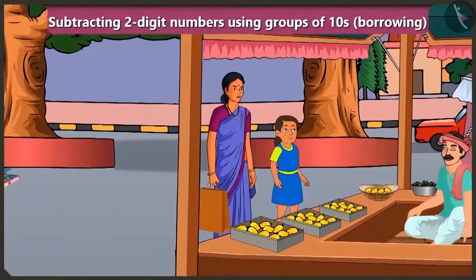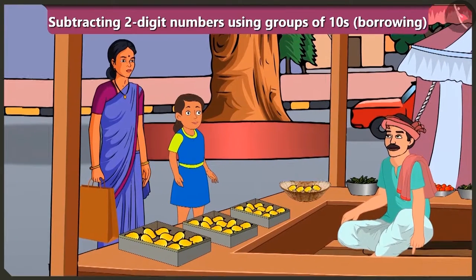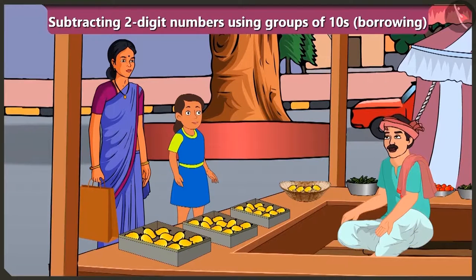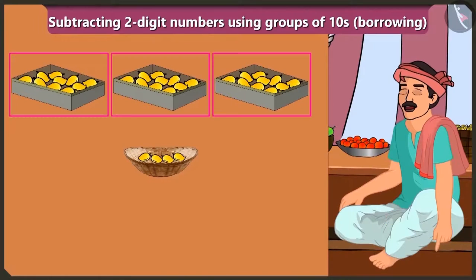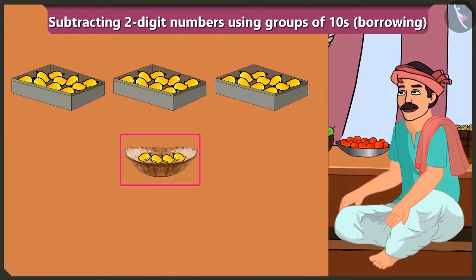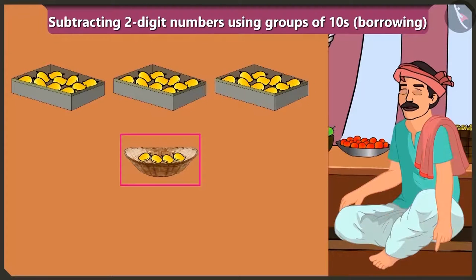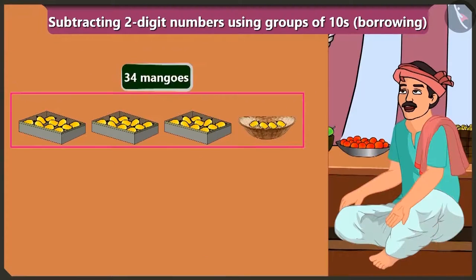Bubbly has gone to the market with her mother today. While visiting the market, they stop at a mango stall. Mommy, look, we can get mangoes from there! The brother at the stall explains: there are ten mangoes in one box. I have three tens and four ones, means thirty-four mangoes.